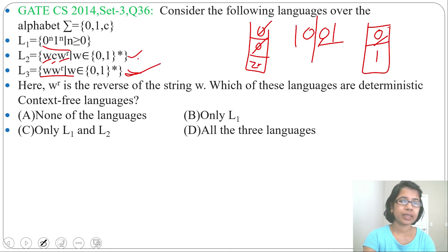For which language you can design DPDA, that is deterministic context-free language. For which you cannot design DPDA, that is a non-deterministic context-free language.